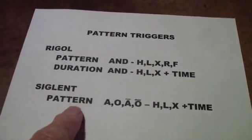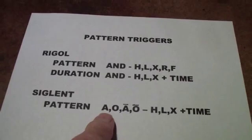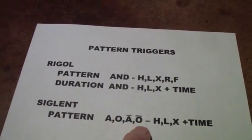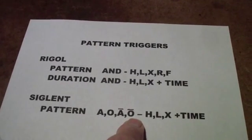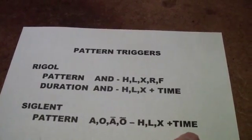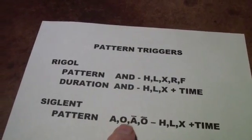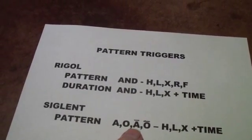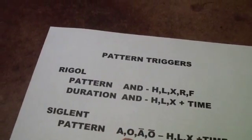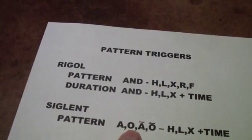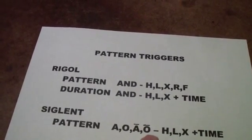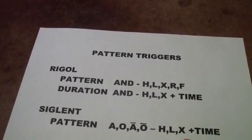If you compare that to the pattern trigger in the Siglent, it's the AND or NAND, NOR, or NOT OR of high, low, don't care, and time. So in other words, it is the same as the Rigol pattern trigger, only you have additional options of ORing, NANDing, and NORing these signals together.